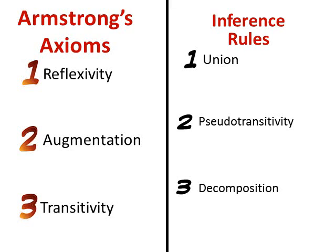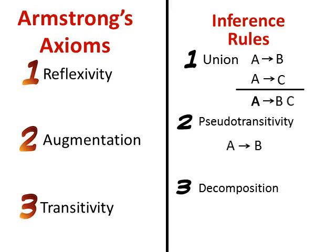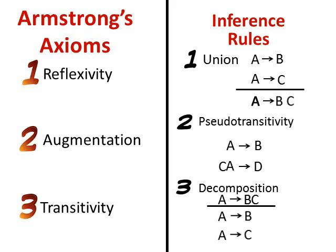The union inference rule: if A determines B and A determines C, since they have the same left side, you can keep attribute A and union the right side to get A determines BC. The pseudotransitivity rule: if A functionally determines B and CB determines D, all we have to do is replace B by A to derive CA determines D. The decomposition inference rule works the opposite of the union rule: keep the left side and decompose the right side, so A determines BC gives us A determines B and A determines C.